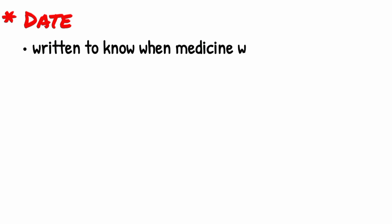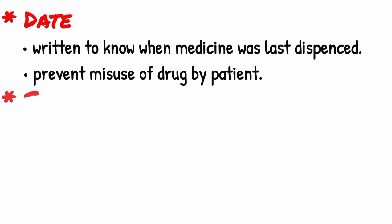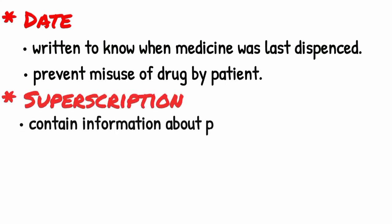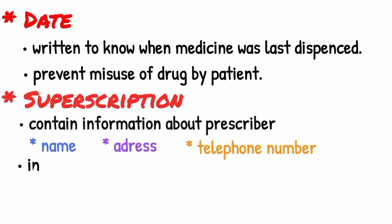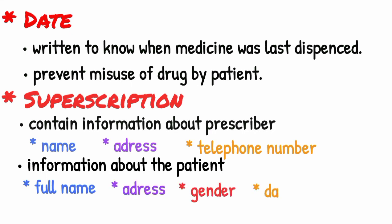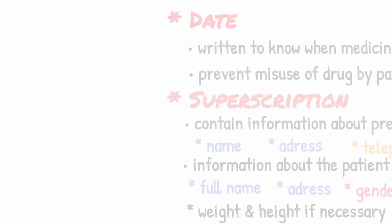The date is written to know when the medicines were last dispensed and to prevent the misuse of the drug by the patient. The superscription part contains information about the prescriber — like name, address, and telephone number — and information about the patient: full name, address, gender, date of birth, weight, and height if necessary.